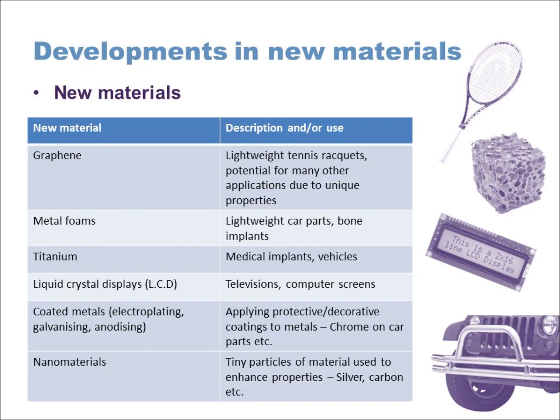Other developments in materials include nanomaterials — basically tiny particles of materials implemented into various applications to enhance properties, similar in concept to composite materials. For example, graphene could be considered a nanomaterial application. Silver nanoparticles are also used because silver has antibacterial properties — you may have seen plasters with silver particles. Silver nanoparticles are even being stitched into clothing, because bacteria thrive in warm, sweaty environments and the silver helps keep things fresh.